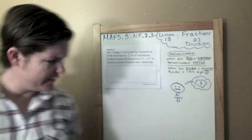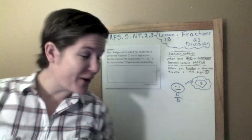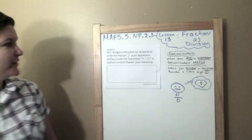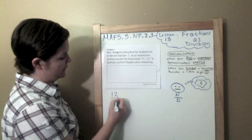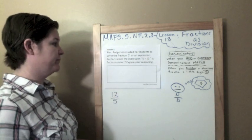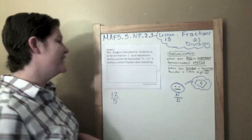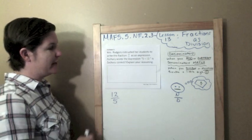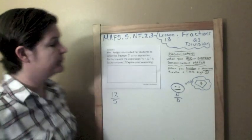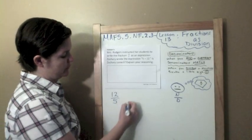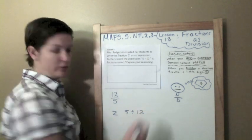Last one. Example five: Mrs. Rogers, everybody say hey Mrs. Rogers, instructed her students to write a fraction, twelve-fifths, to write this as an expression. Zachary, everybody say hey Zachary, Zachary wrote the expression five divided by twelve. Is Zachary correct? Explain your reasoning. So Zachary wrote five divided by twelve.